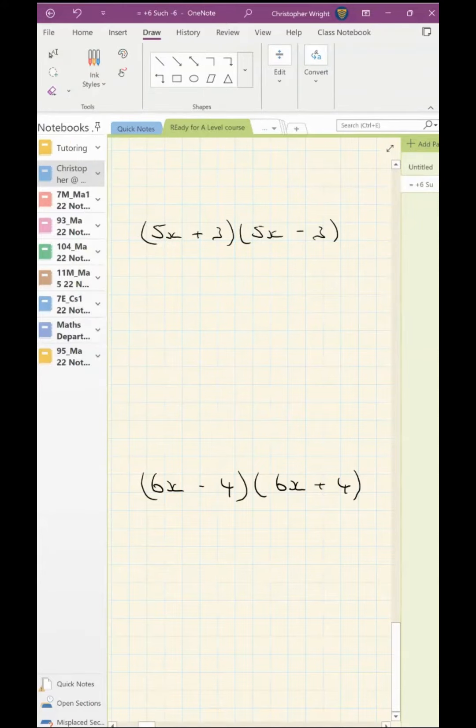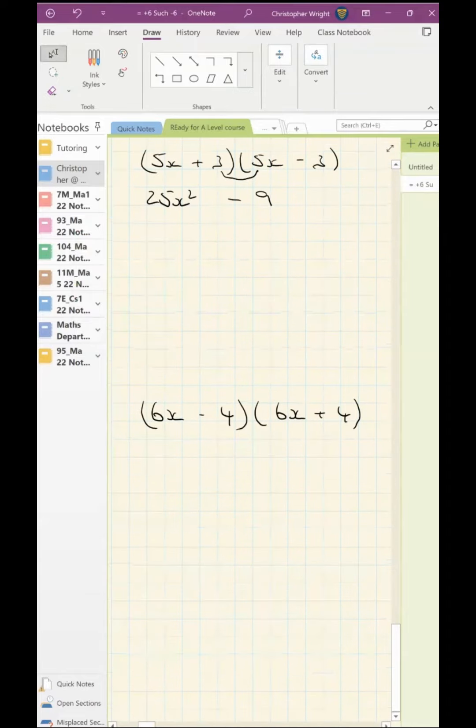5x times 5x is 25x squared. Now my nose gives me 15x, but my mouth gives me minus 15x. So I end up with no x's at all, and minus 9 at the end. So you can probably write down the answer to this second example straight away.